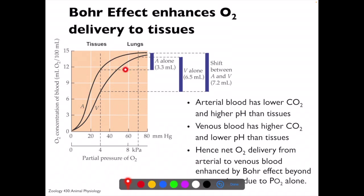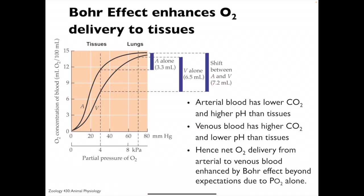Here's another example, thinking about arterial and venous blood. Arterial blood has lower CO2 and higher pH than the tissues, while venous blood has higher CO2 and lower pH. Starting from the lungs along the arterial side going to the tissues at 4 kPa, we have a net 3.3 ml delivery. If you compare the venous curve, we have about 6.5. Looking at the shift between arterial and venous, you get a total of 7.2 — an additional amount due to the Bohr shift beyond just the partial pressure of oxygen alone.